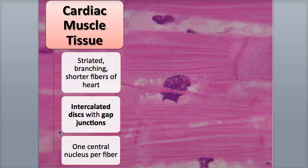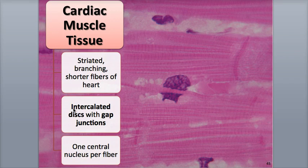Cardiac muscle fibers are connected to each other at their ends by thickened regions of their plasma membranes, also called the sarcolemmas, called intercalated discs.